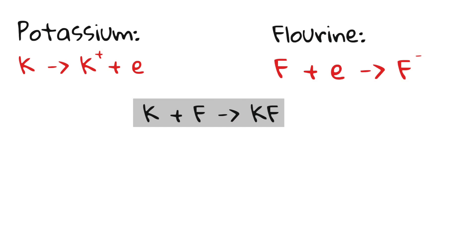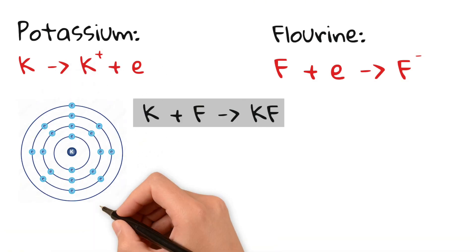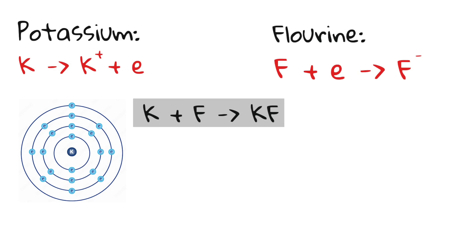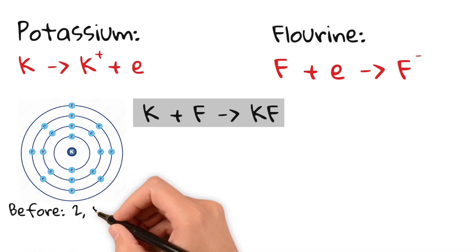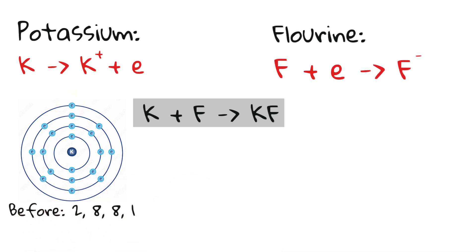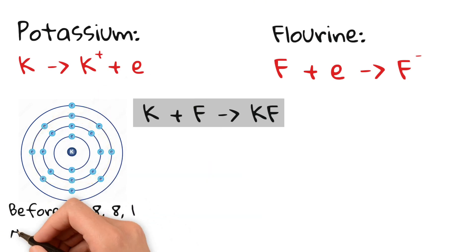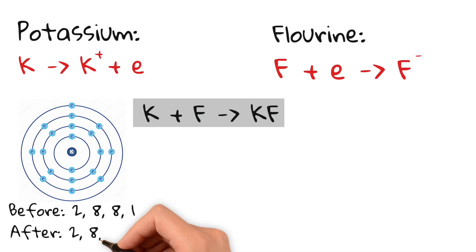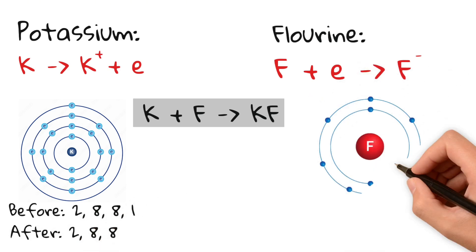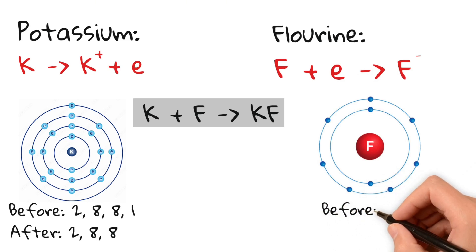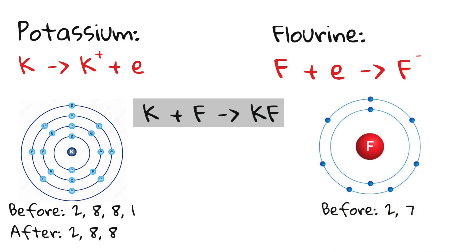Now let's look at the electron configurations. Potassium is in period 4 and group 1, meaning it has three fully filled shells and its outermost shell has one valence electron — so its configuration is 2, 8, 8, 1. After losing one electron, the fully filled shell underneath is exposed, giving a configuration of 2, 8, 8. Fluorine is in group 7 and period 2, so its electron configuration is 2, 7. After gaining one electron, it becomes 2, 8.